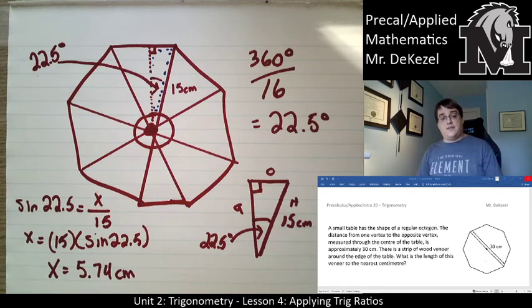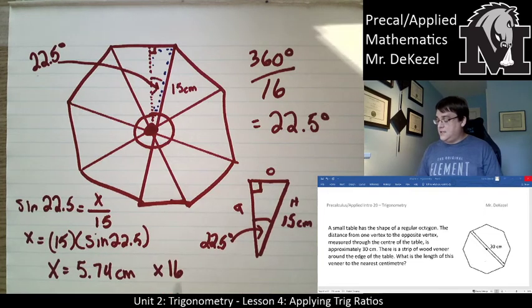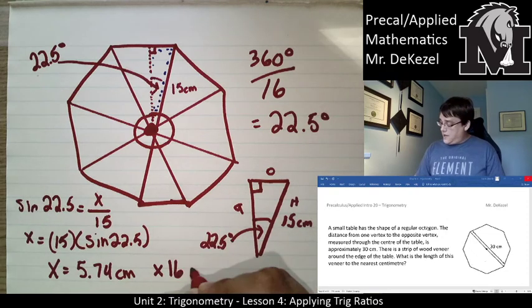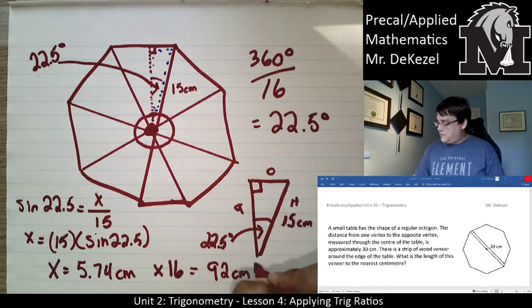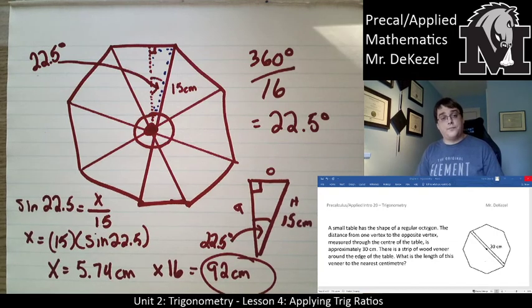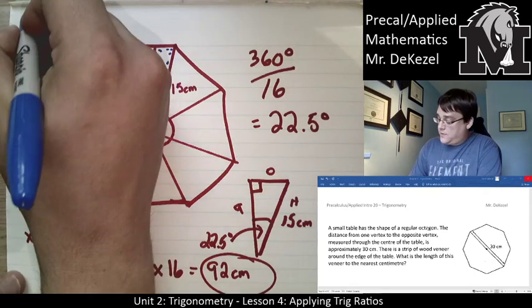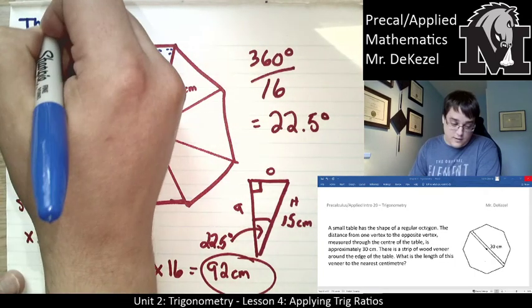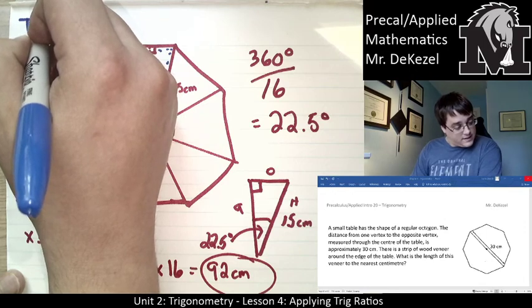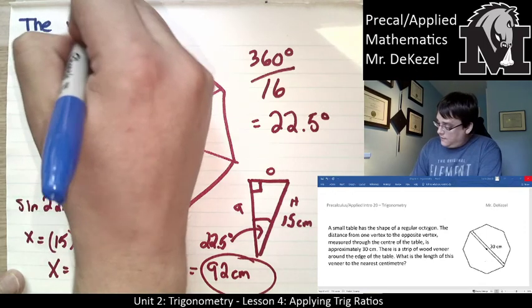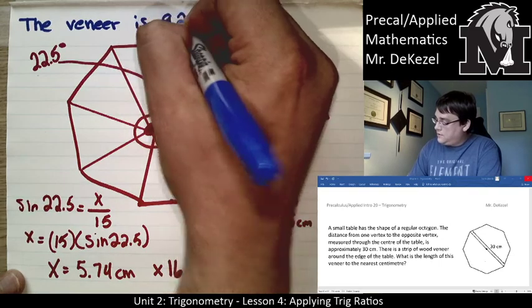So 1 16th of it is 5.74 centimeters. We need to multiply that number by 16 to get the entire perimeter, which is the length of the veneer. So that equals 92 centimeters. We would want to write a sentence. I'll see if I can fit it at the top. I'll write it in a different color here. The veneer is 92 centimeters.